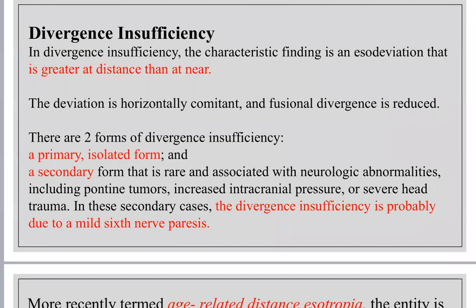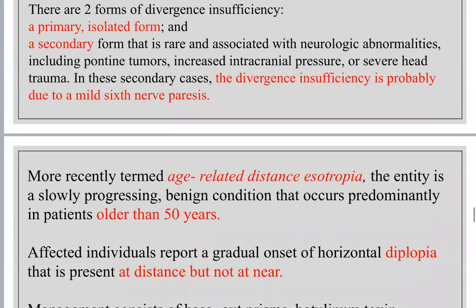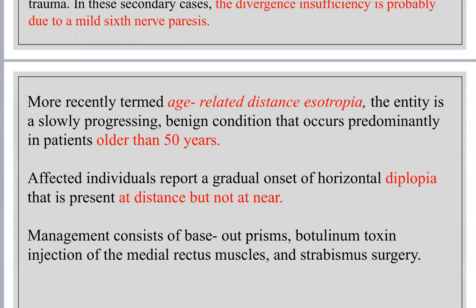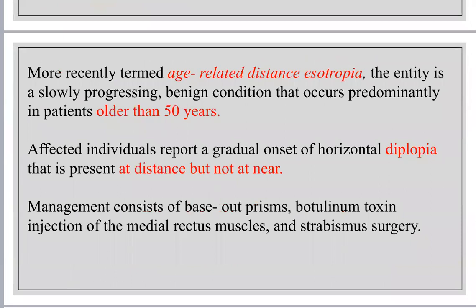Divergence insufficiency: the esotropia is more evident at far vision (distance) than at near. There are two forms: primary (isolated) and secondary. The secondary form may be related to mild sixth nerve paresis or neurological abnormality. This condition also occurs in older age and is called age-related distance esotropia. Patients are typically older than 15 years, with diplopia at distance but not at near.